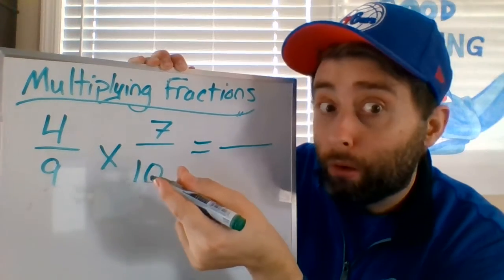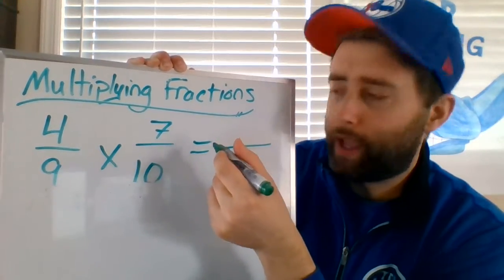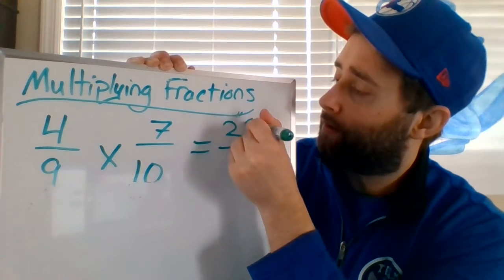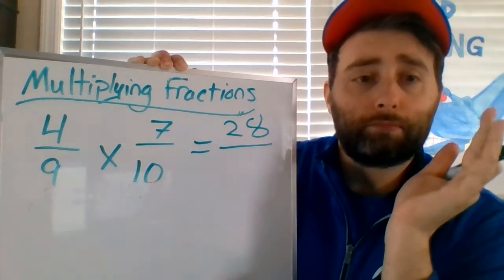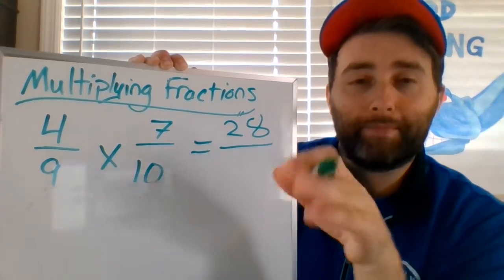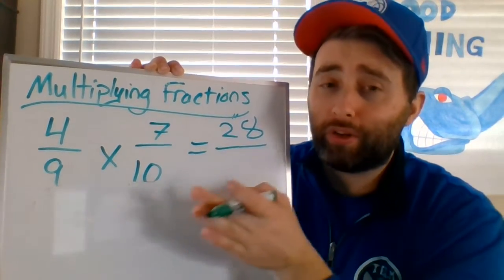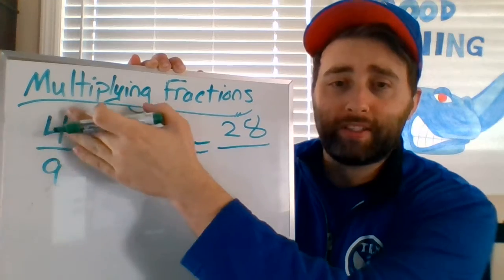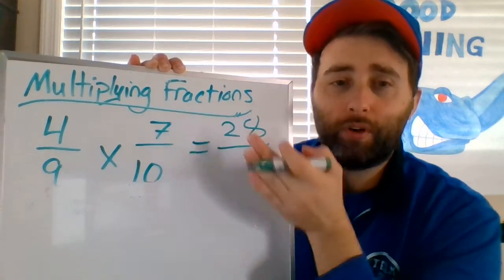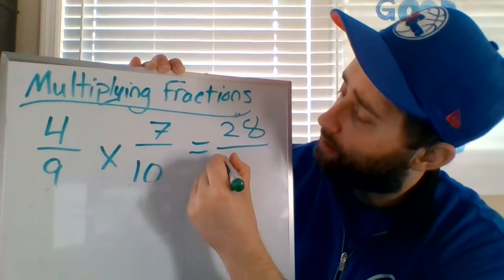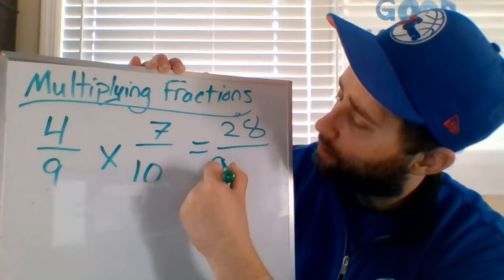Okay, 7 times 4, very good, 28. And then the bottom side, 9 times 10. So make sure you're not cross multiplying here. We are just simply multiplying across. 7 times 4, a terribly written 28, 9 times 10, gonna be a terribly written 90.